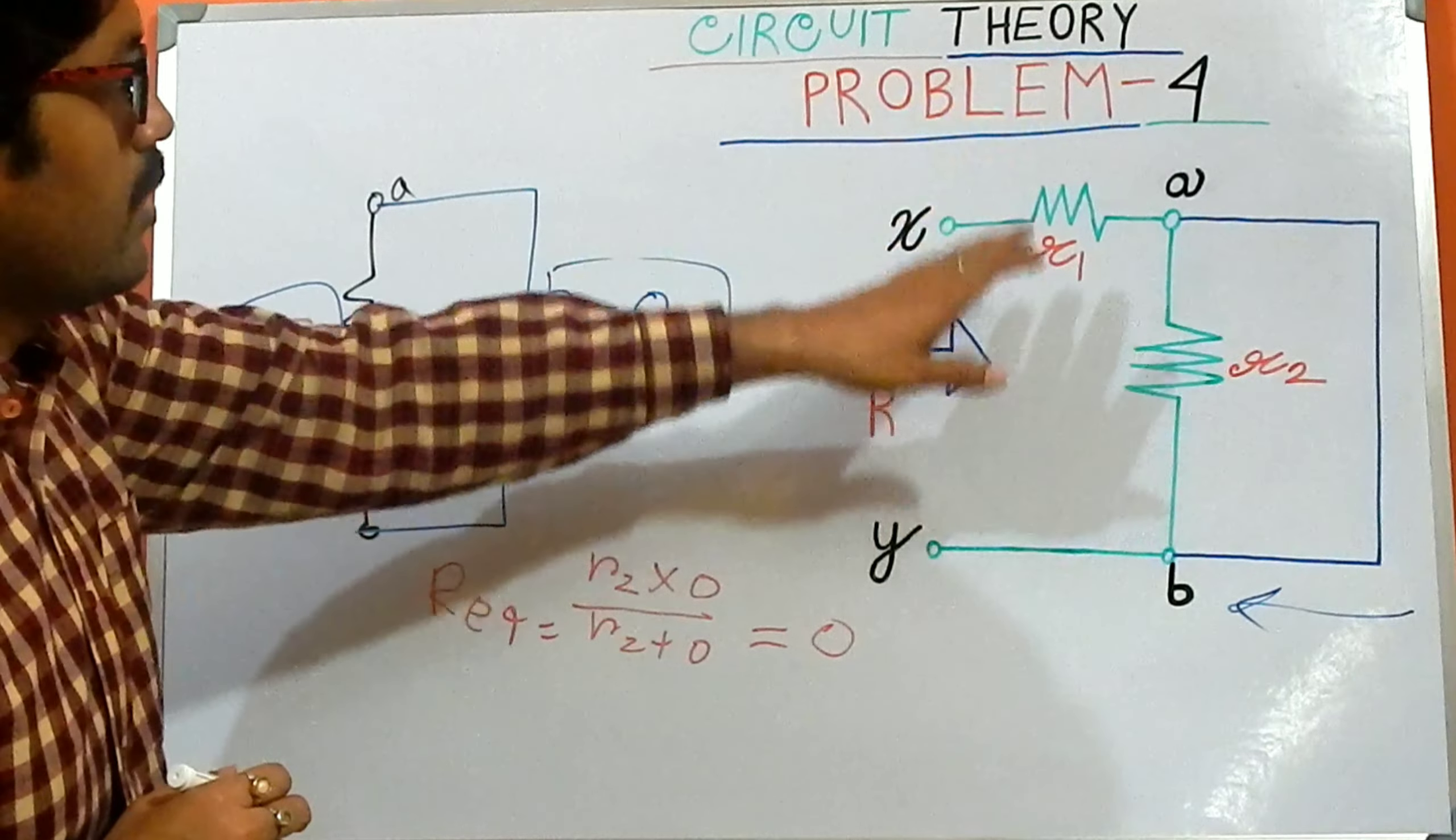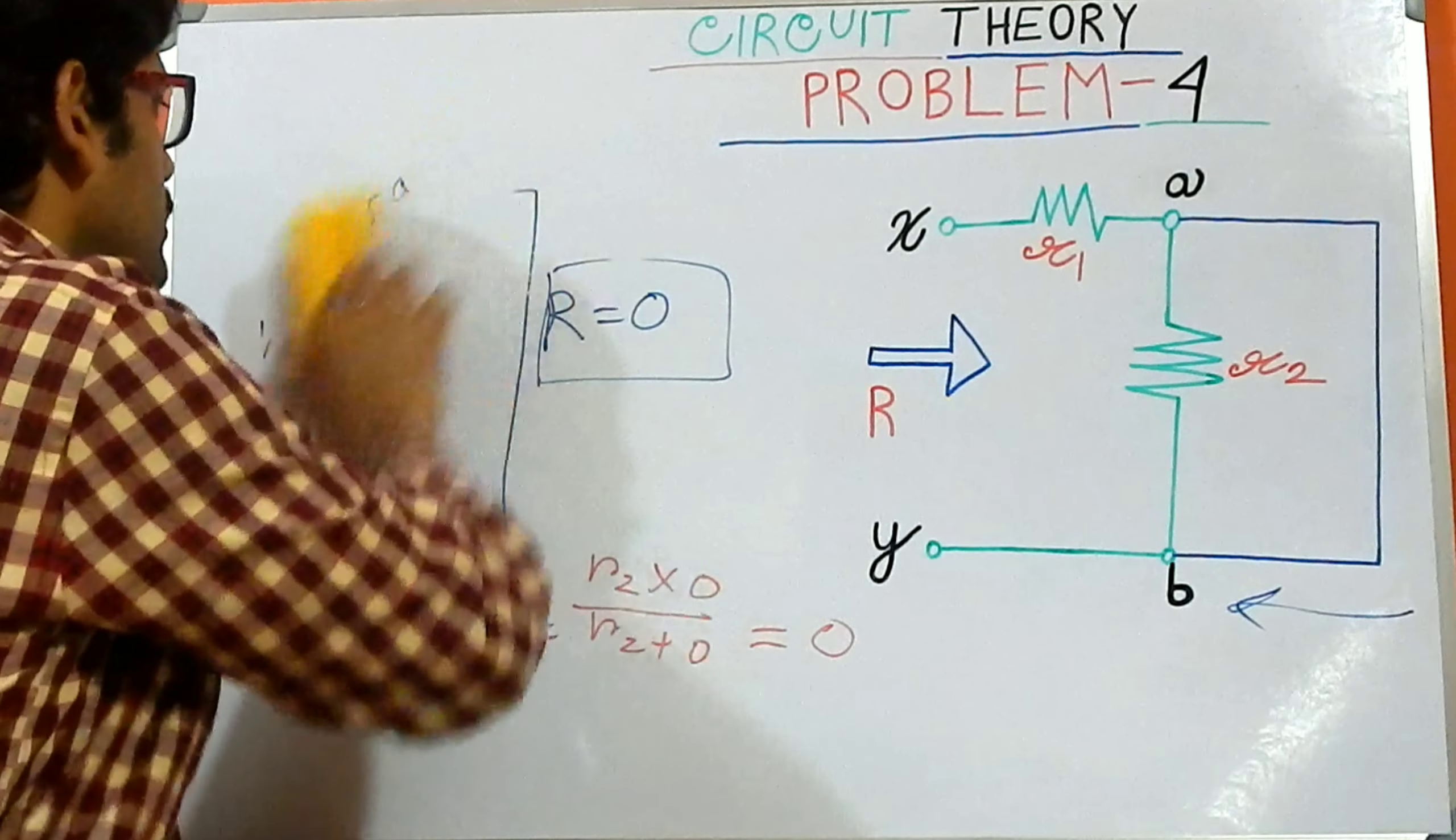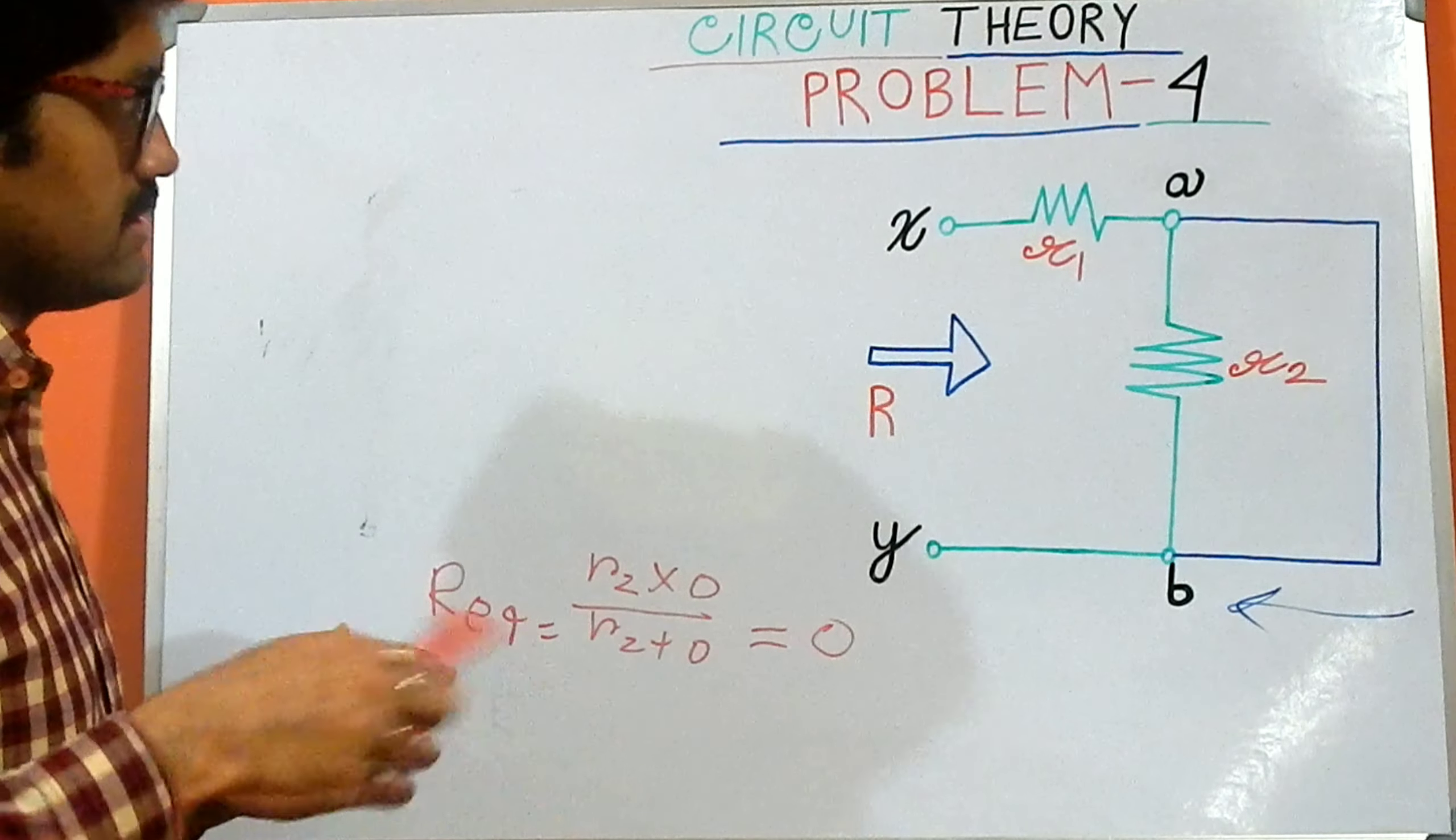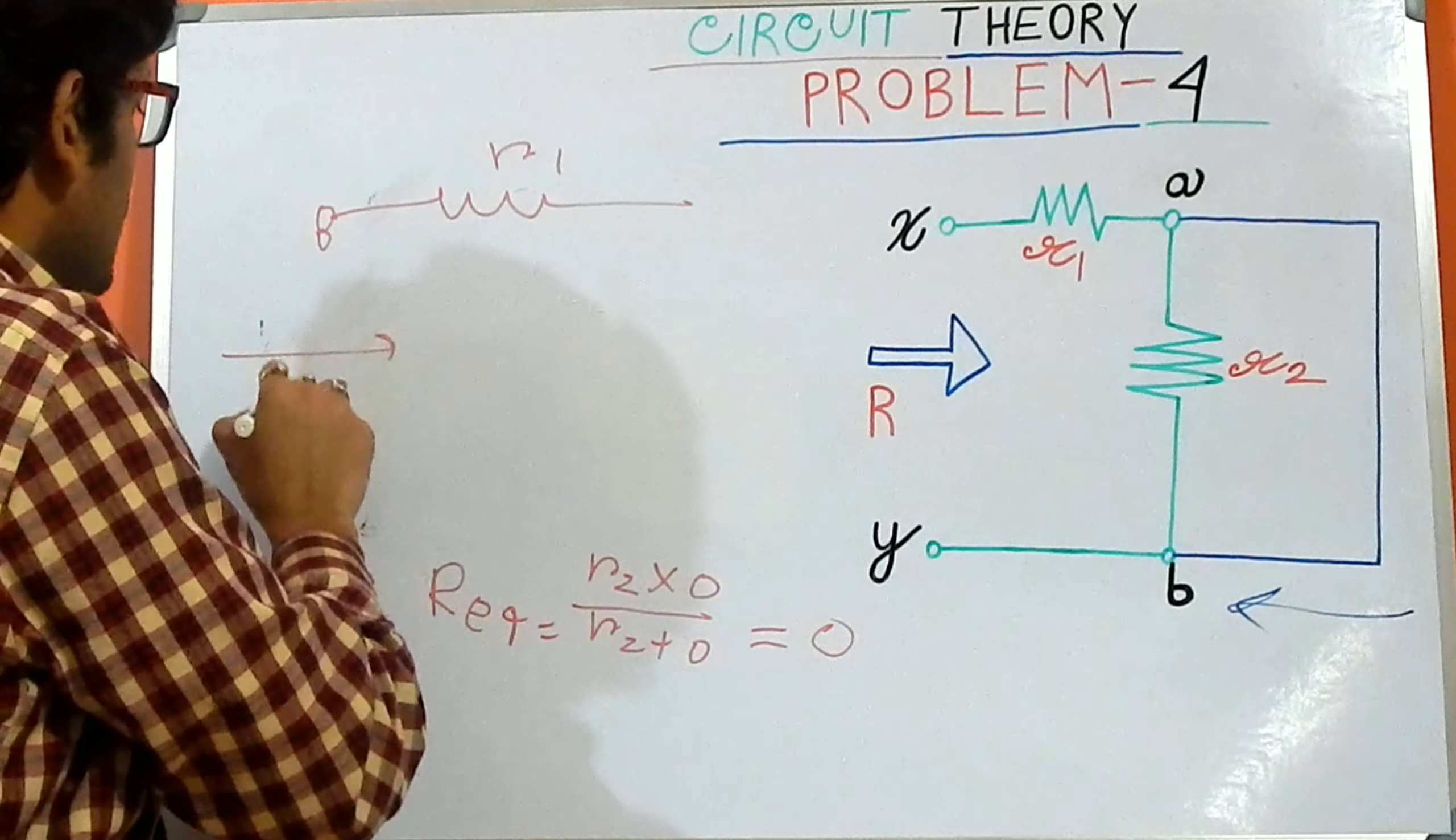So only R1 is placed over there. I want to draw the final answer over here. R2 and 0 will cancel each other and only R1 is placed. So only R1 is present.